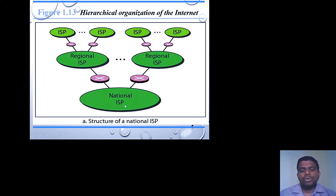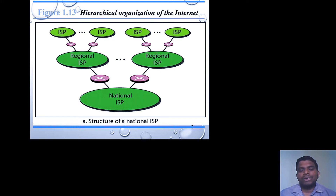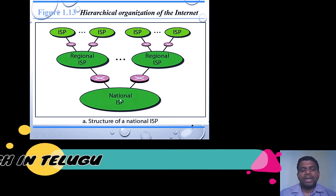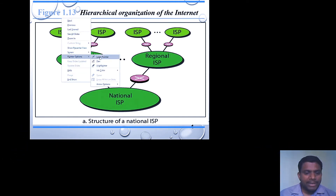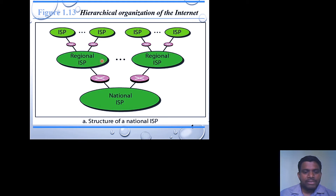The National Internet Service Provider is responsible for providing network services to the entire nation — for example, India. Whoever is responsible for providing internet services to all of India is known as the National Internet Service Provider. Similarly, the Regional Internet Service Provider is responsible for providing internet services within a specific region.